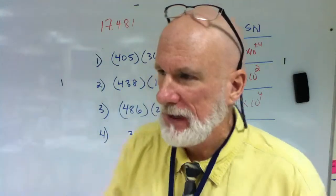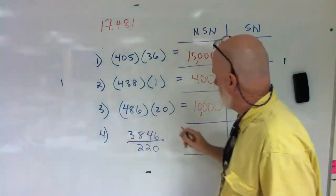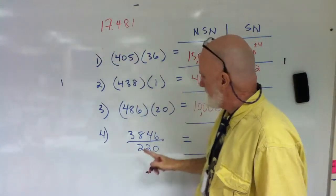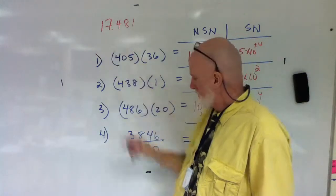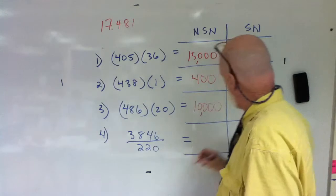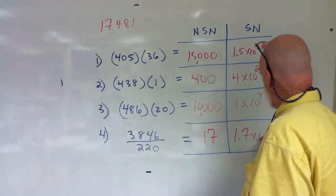This tells you how many significant figures you can have, and the answer is two, right? So it's 17 only. That's it, 17, or 1.7 times 10 to the one.